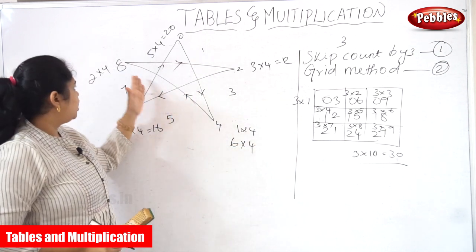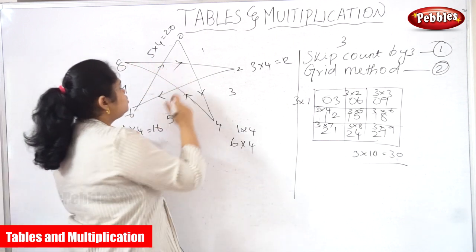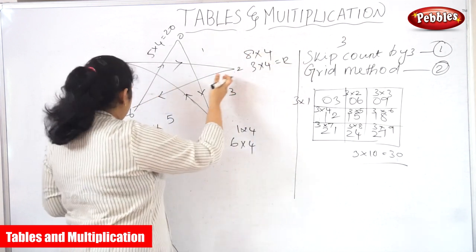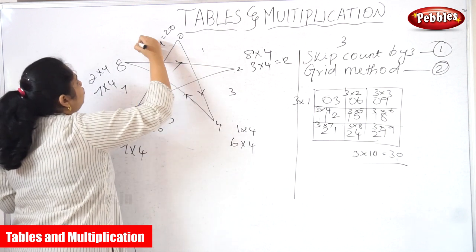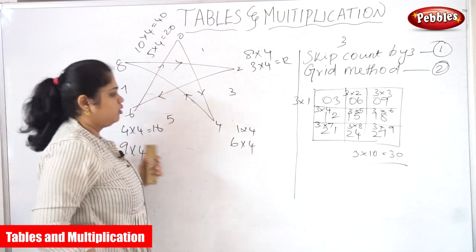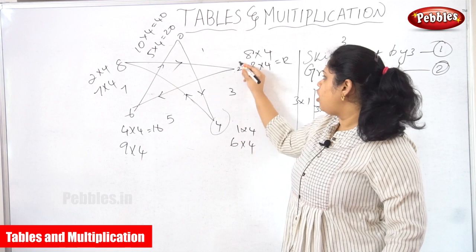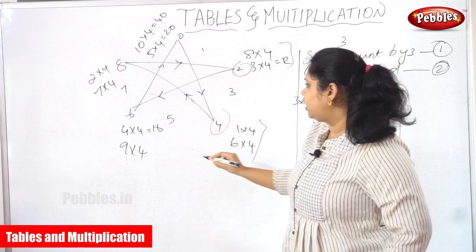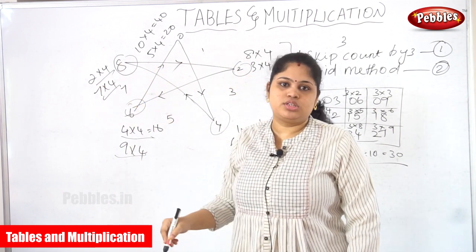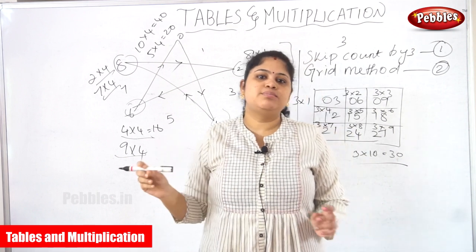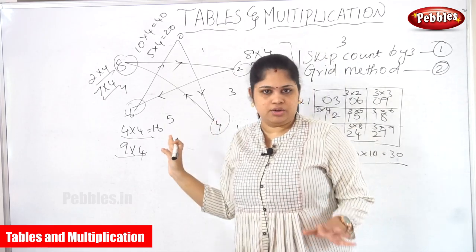Continuing along the star: seven into four is twenty-eight, eight into four is thirty-two, nine into four is thirty-six, and ten into four is forty. At every point on the star, two steps are covered. Every point meets two steps, making this a very simple and easy method to learn the four table with the help of this chart.